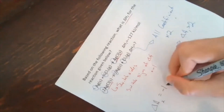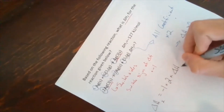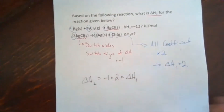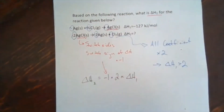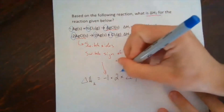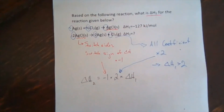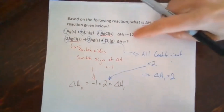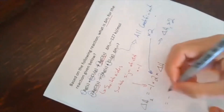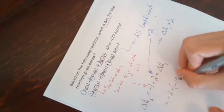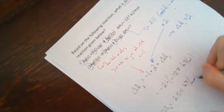Putting those differences together: delta H2 equals negative one times two times delta H1. The negative one comes from swapping the sign, and the two comes from the coefficient change. Plugging in: negative one times two times negative 127 kilojoules per mole gives us delta H2 equals positive 254 kilojoules per mole.